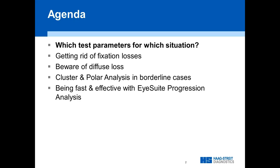One of the key questions I always get is which test parameters for which situation. So I'll start with that, but we can also look at how to get rid of fixation loss, tools to look at diffuse loss and why they're useful, cluster and polar analysis for early borderline cases, and how you can really be faster and more effective for progression analysis when you use the iSuite software.